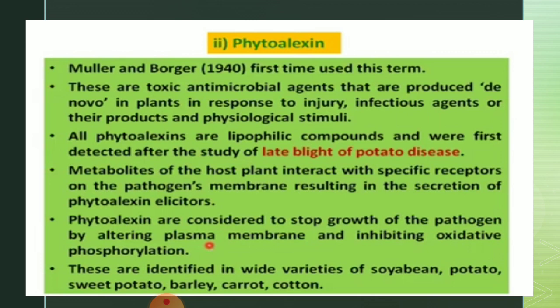When scientists studied late blight of potato with Phytophthora infestans, they found that when potatoes were first infected with an avirulent strain of Phytophthora infestans, and then subsequently infected with a virulent strain, there was no disease development — demonstrating the role of phytoalexins in resistance.